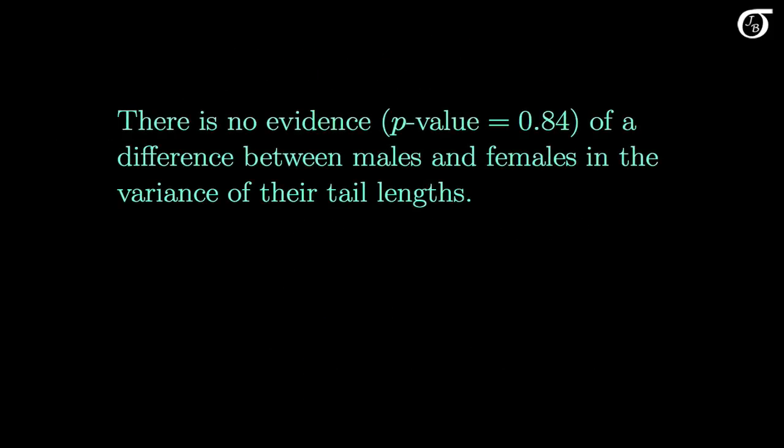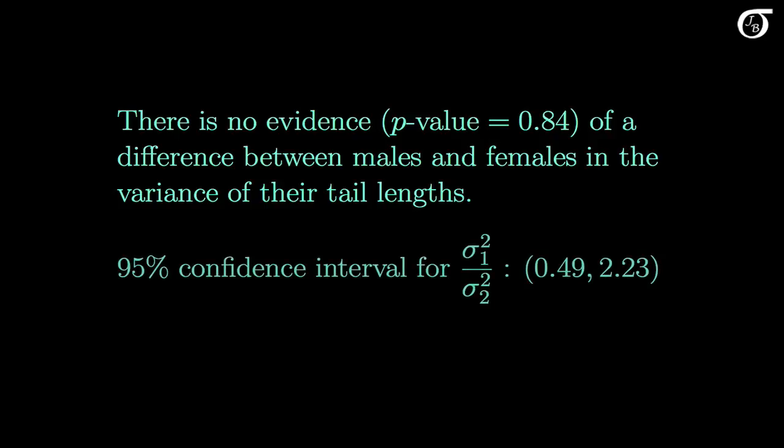It means there is no evidence, based on this large p-value of 0.84, of a difference between males and females in the variance of their tail lengths, for this species of lizard, in the area of the study. We could also report the 95% confidence interval of 0.49 to 2.23.